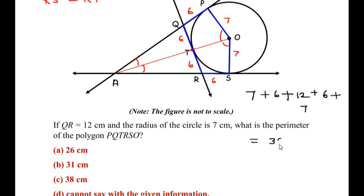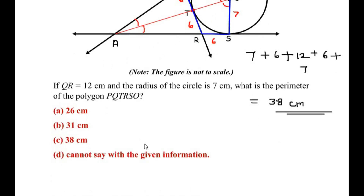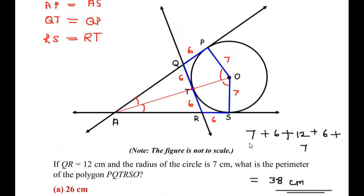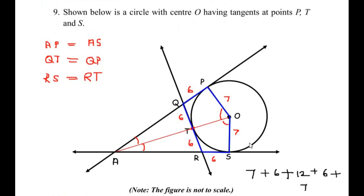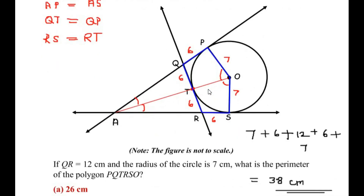So the perimeter of the given polygon is 38 centimeters. Checking the options, it is option C. We made use of the Two Tangents Theorem to find the perimeter of the polygon. I hope you understood all the steps and liked the video. If you know any other way of solving this, do comment below. If you are liking my videos, like, share, and subscribe to my channel. Thank you for watching.